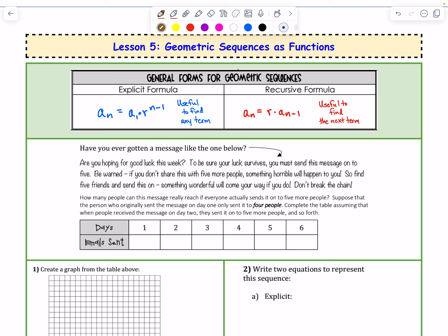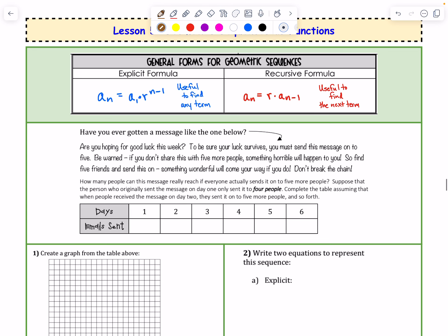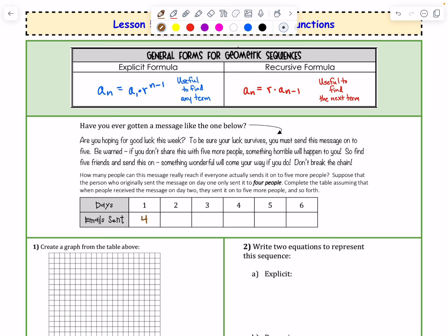Suppose that the person who originally sent the message on day 1 only sent it to 4 people. Complete the table, assuming that when people receive the message on day 2, they send it on to 5 more people, and so forth. Alright, so day 1, the original person sent it to 4 people, so let's put that in. And then starting on day 2, that person sent it on to 5 people. So those 4 people send it to 5 people.